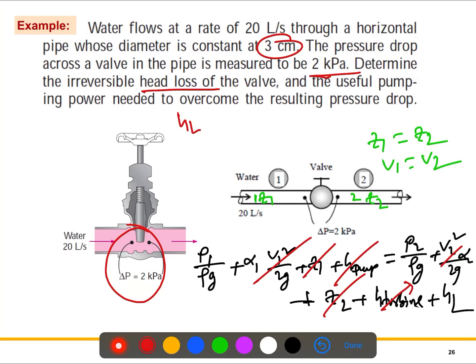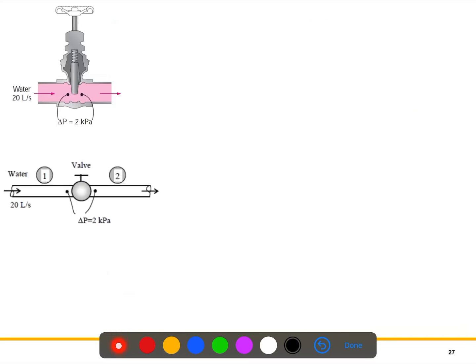So that means what we have is we only have this term, this term, this term, and the hL. So what I can write it down, if I just write it down like this, it is P1/(ρg) equals P2/(ρg) + hL.